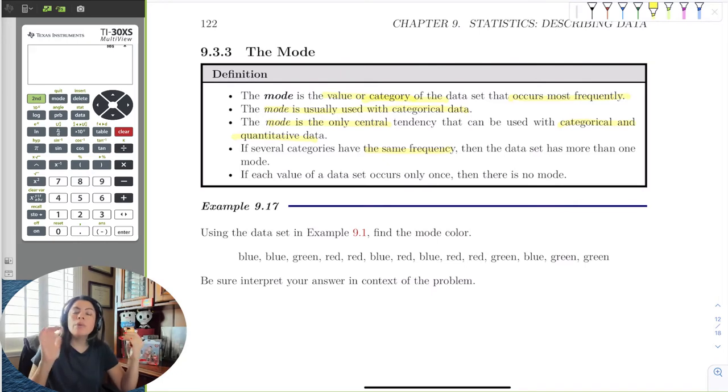If everything is just listed once, like there are no duplicates of observations, there is no mode. So it's not zero or anything, it's just no mode.